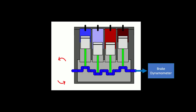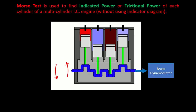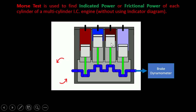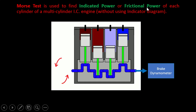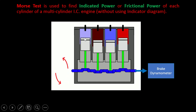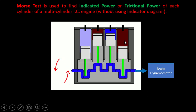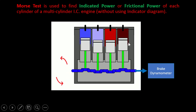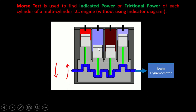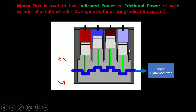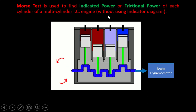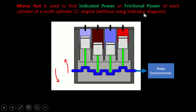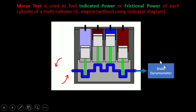Today's topic of discussion is the Morse Test. The Morse Test is used to find the indicated power or frictional power of each cylinder of a multi-cylinder IC engine. Here we have taken four cylinders. This will be done without using an indicator diagram.